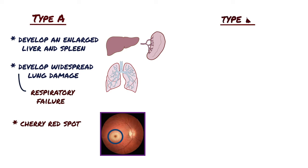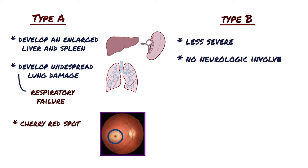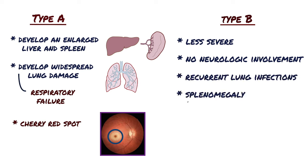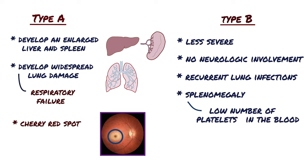Niemann-Pick disease type B usually presents in mid-childhood. The signs and symptoms are similar to type A but not as severe and do not include neurologic involvement. People with Niemann-Pick disease type B often have recurring lung infections and thrombocytopenia, which causes a low number of platelets in the blood. They also have short stature and slowed mineralization of bone, but usually survive into adulthood.